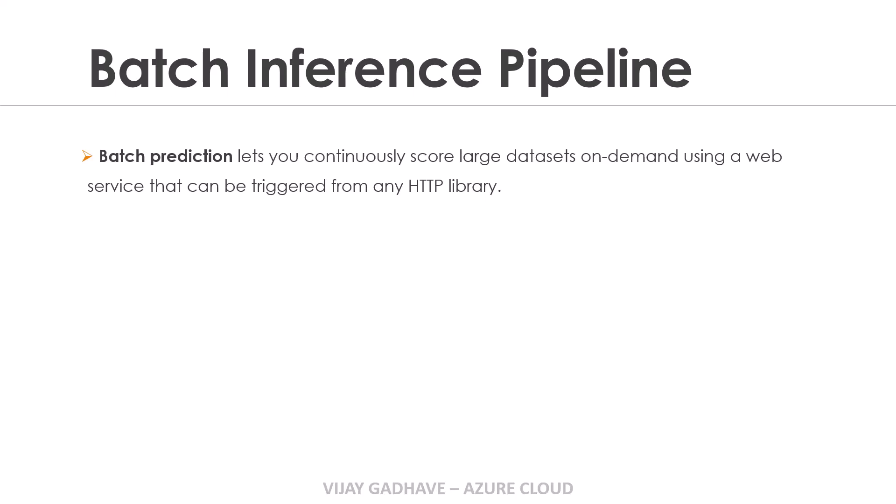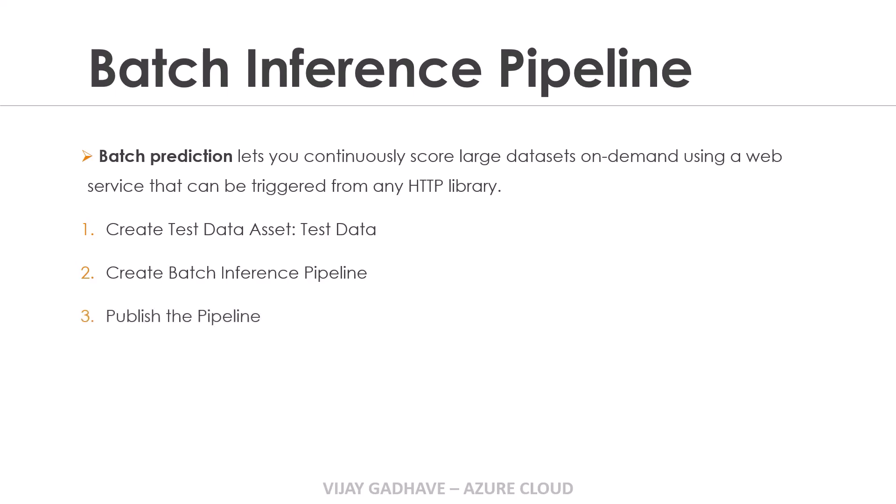Let us have an overview of the steps that we are going to perform in batch inference pipeline. First, we will create the test data asset, we will call it as test data. After that we will create the batch inference pipeline. Then we will publish the same. And at the end we will predict the outputs.